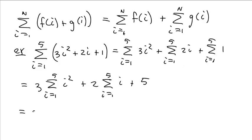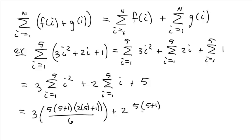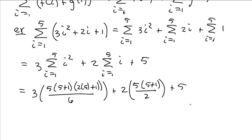And what is this? This is 3. The summation for i squared was n times n plus 1 times 2n plus 1 all over 6. So this is 5 times 5 plus 1 times 2 times 5 plus 1 all over 6. And then this one is 2 times what? This was the n times n plus 1 over 2 if it's just the i. So it's 5 times 5 plus 1 all over 2 plus 5.